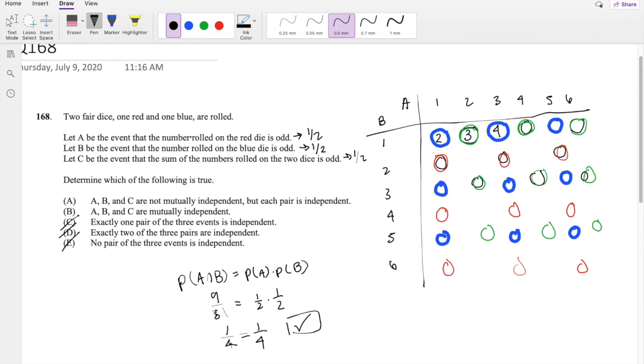We know that A and B can happen at the same time, right? A is odd and B is odd. So I'll just highlight these ones. A is odd and B is odd. So it's going to be these ones, the blue ones. But do these sums add up to odd?